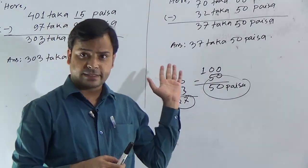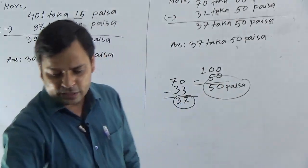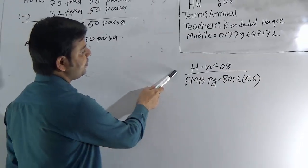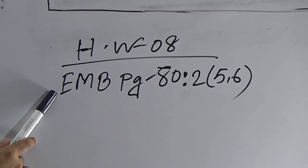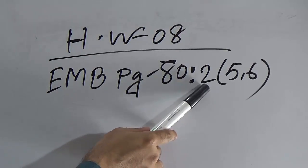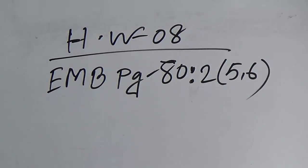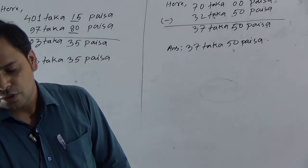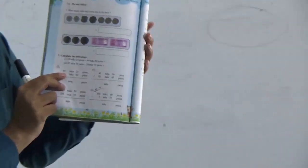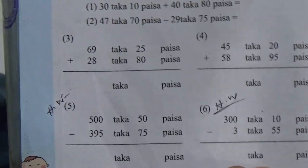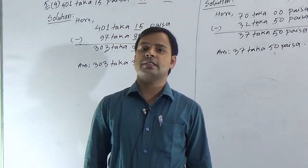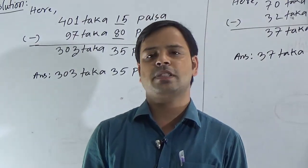Students, based on today's lecture, I have given 2 questions for your homework. This is homework 8, given from your EMB book, page 80, activity 2, question 5 and 6. These 2 questions are related to today's questions, so solve them. Homework is important for your annual examination, as your CT marks, diary marks, and SBA marks will be given based on your homework performance.